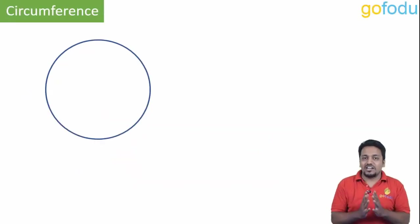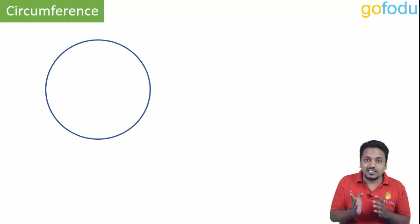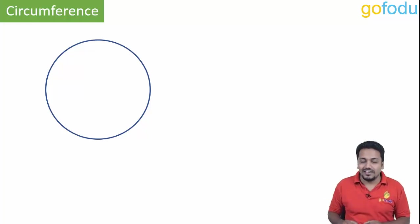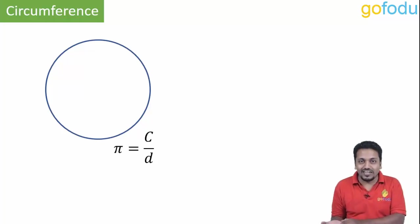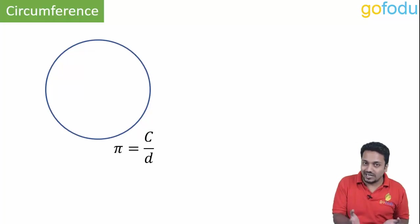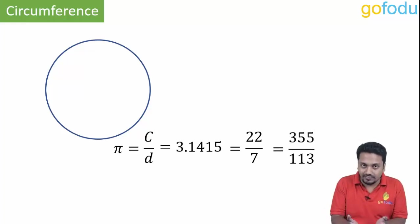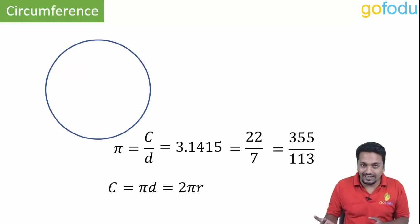Next topic is the circumference of a circle — the distance around it. Hundreds of years ago, mathematicians discovered that in a circle the ratio of circumference to its diameter is always constant, approximately 3.1415, or 22 upon 7. That is an approximation; more accurately we can take 355 upon 113. So circumference comes out as Pi d or 2 Pi r.